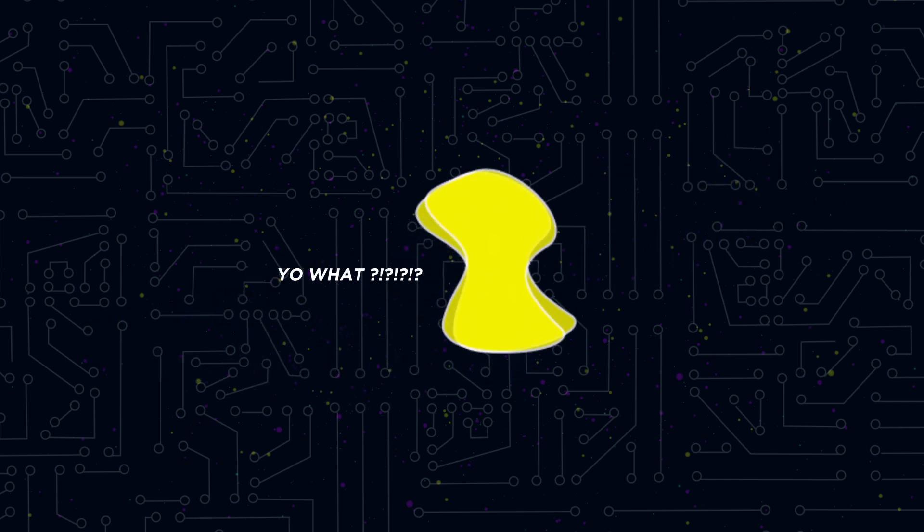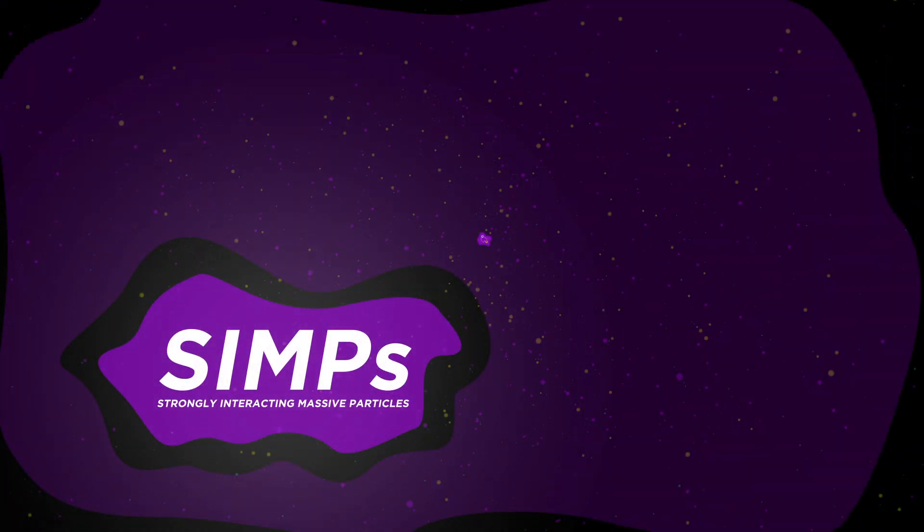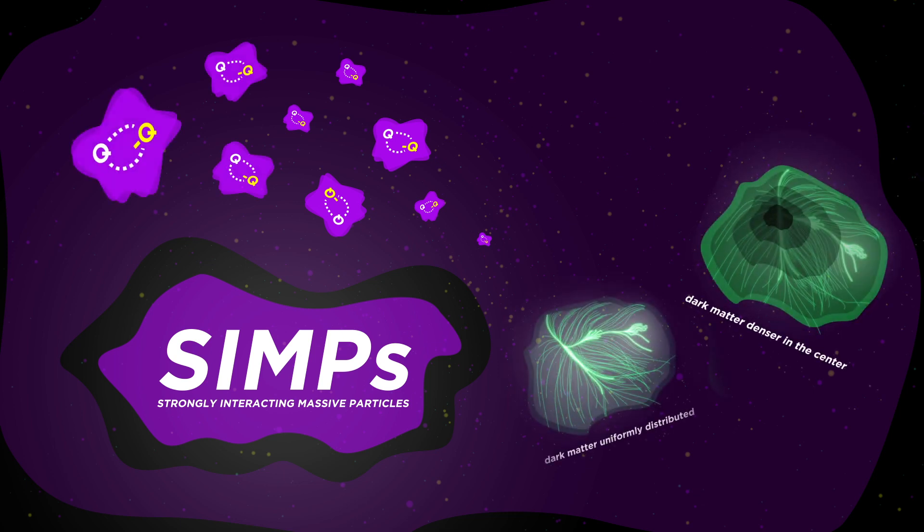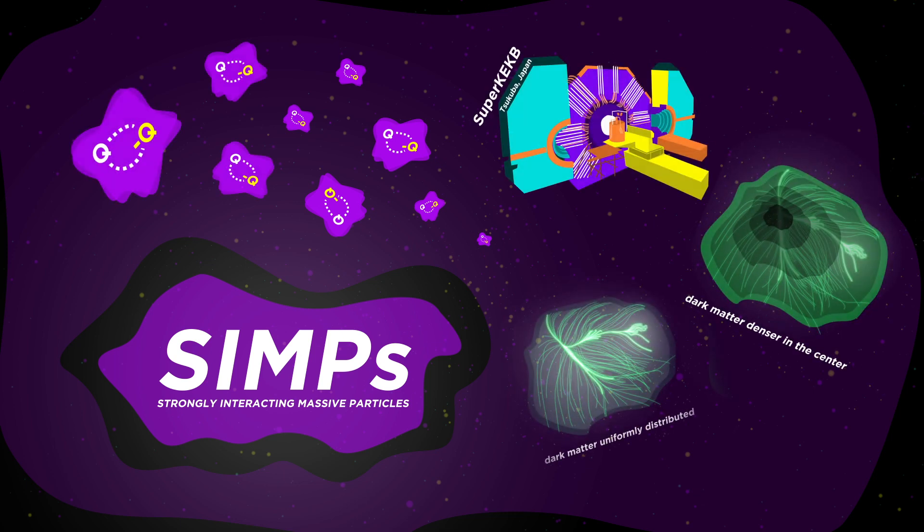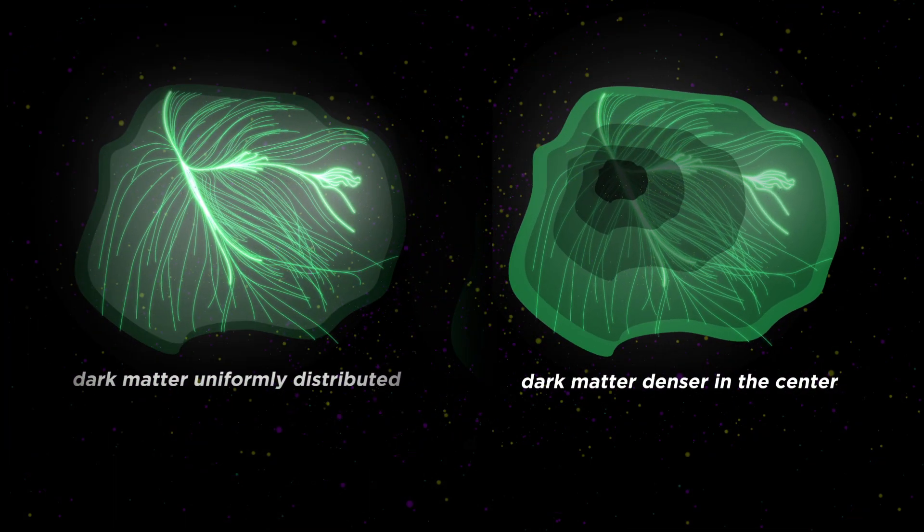So far, we've got none. But if you can't get the WIMPs, go for the SIMPs. That's right, strongly interacting massive particles. See, a problem that comes from dark matter in the form of WIMPs is that it can't really explain why dark matter is uniformly spread out instead of forming high density centers.